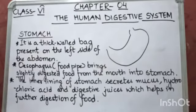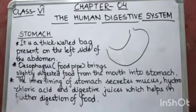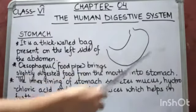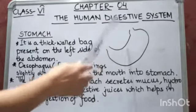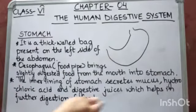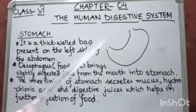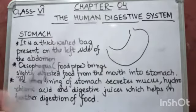In the mouth, the food gets chewed and broken into smaller, softer pieces, and then the food travels to the stomach. The inner lining of the stomach secretes mucus, hydrochloric acid, and some digestive juices, and these juices help in the further digestion of food.